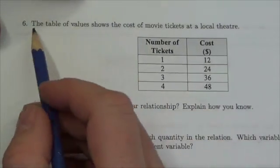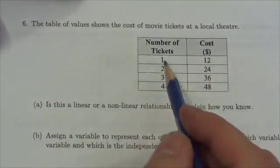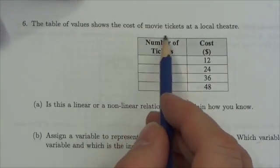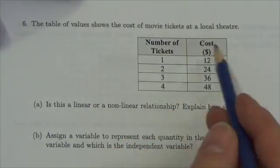Hi everyone. Here we go. The question says, the table of values shows the cost of movie tickets at a local theater. So here's our number of tickets, here's our cost.